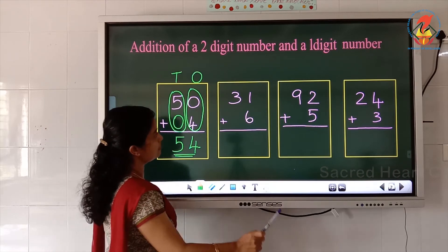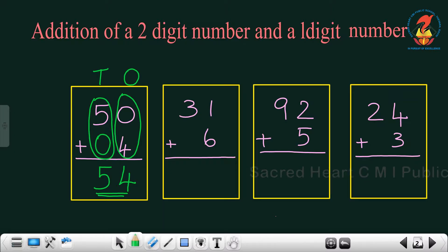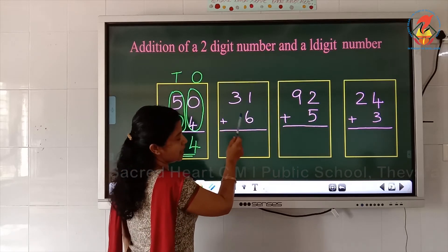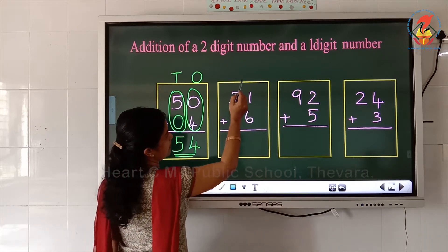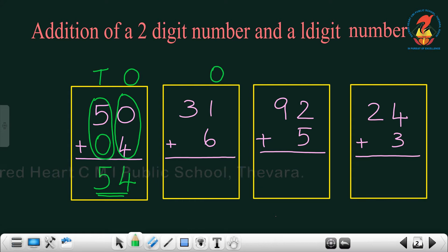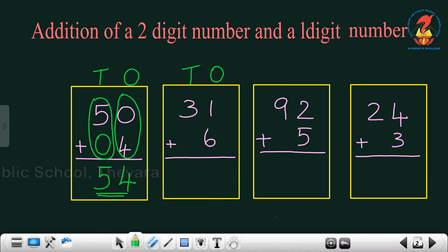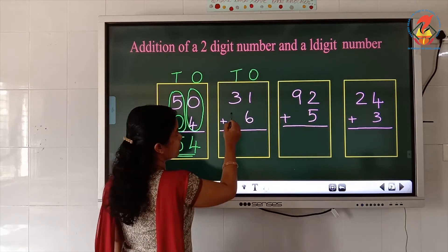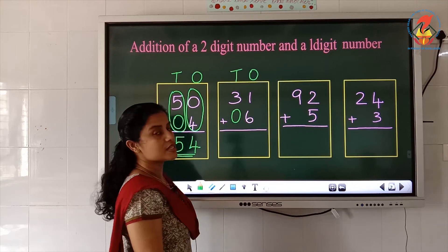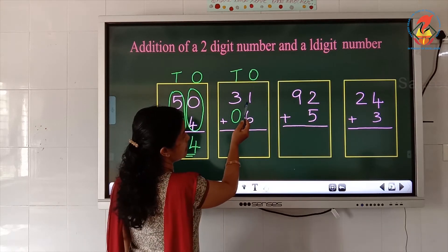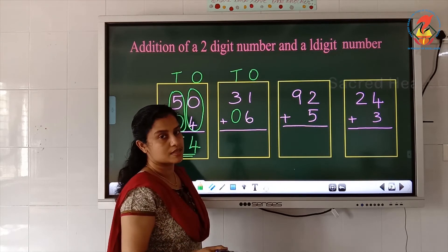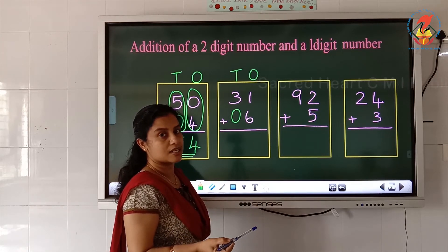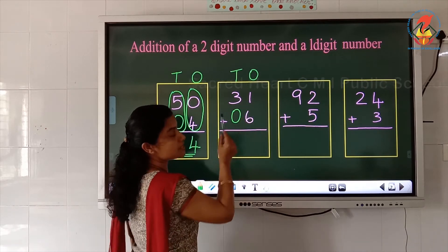Now let us do the next questions. Read the number: 31 plus 6. Here this is a 2 digit number and this is a 1 digit number. What is the first step? Write the place value. This is the ones place, this is the tens place. So we will write O and T. Is there any number here? There is no number, so we have to put 0. Now which are the numbers in the ones place? The numbers in the ones place are 1 and 6. What is 1 plus 6? When we add a number with 1, the answer is the number that comes just after. So 1 plus 6 is 7.